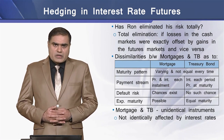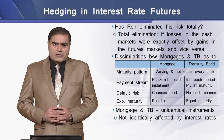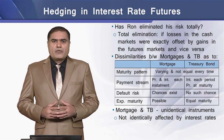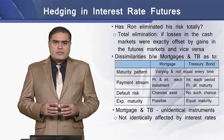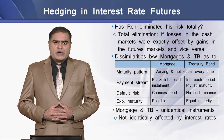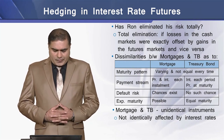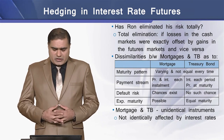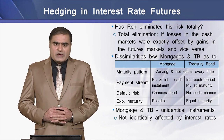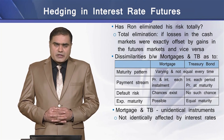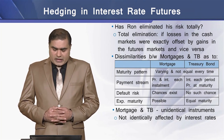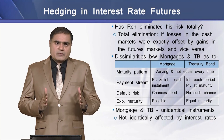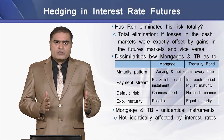Additionally, there is a difference in default risk — mortgages have a much higher chance of default compared to Treasury Bonds, whose default risk is much lesser. Expected early prepayment is also possible in case of mortgage loans, whereas it is essentially impossible in case of Treasury Bonds. As mortgage loans and Treasury Bonds are non-identical instruments, they are not identically affected by interest rate movements.